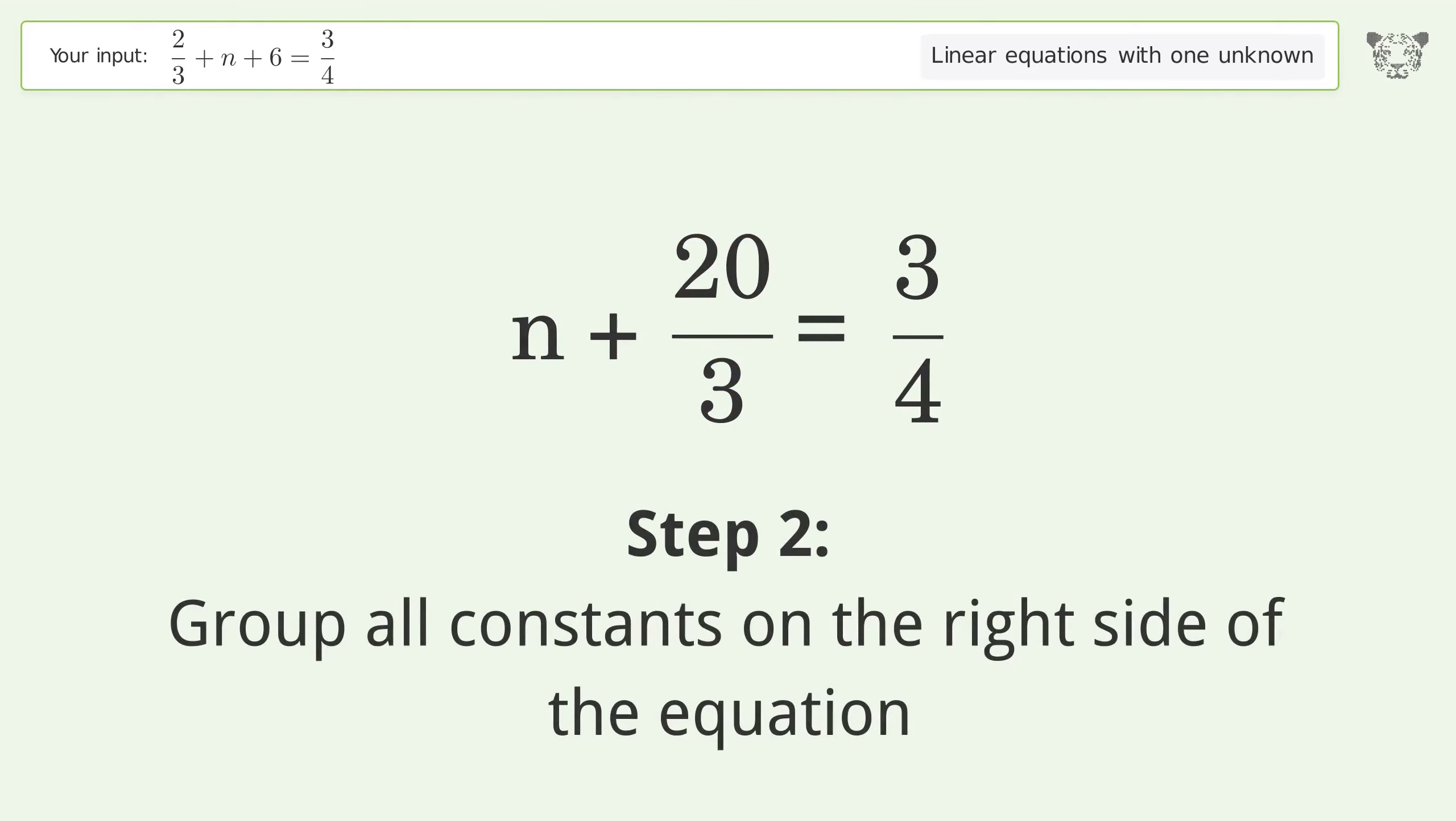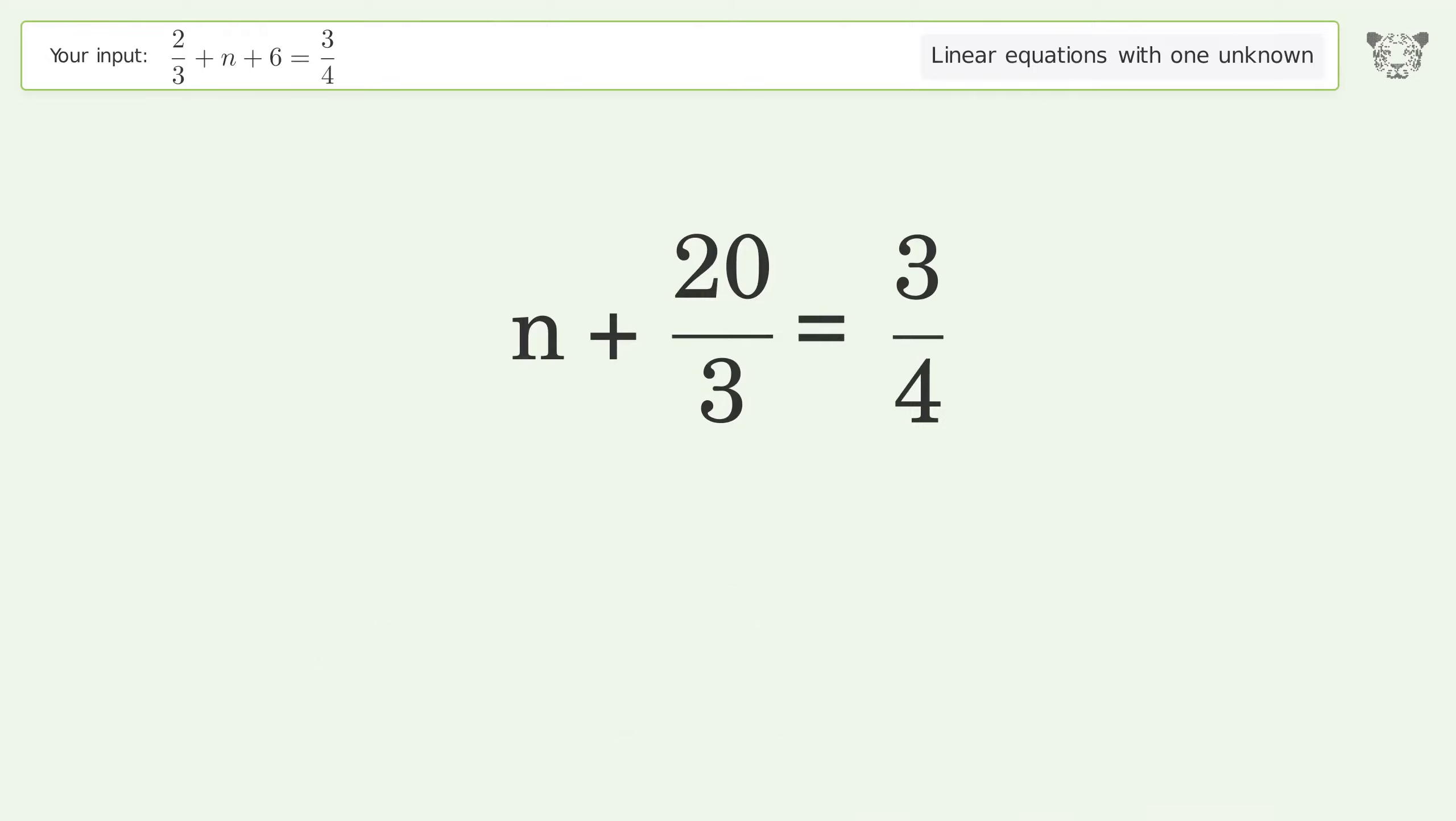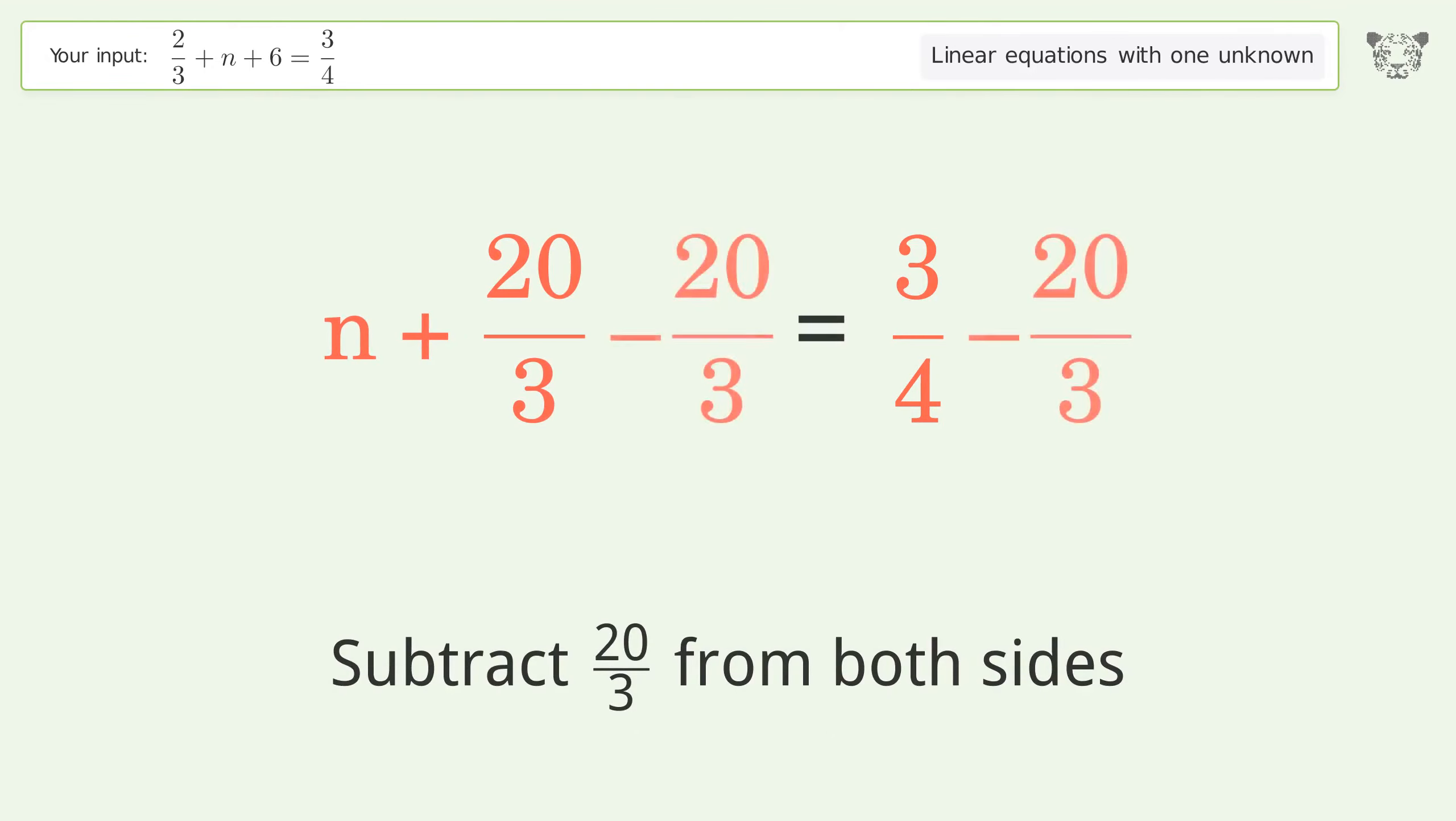Group all constants on the right side of the equation. Subtract 20 over 3 from both sides. Combine the fractions.